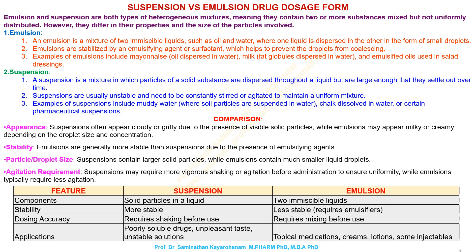Suspension. A suspension is a mixture in which particles of a solid substance are dispersed throughout a liquid but are large enough that they settle out over time. Suspensions are usually unstable and need to be constantly stirred or agitated to maintain a uniform mixture.